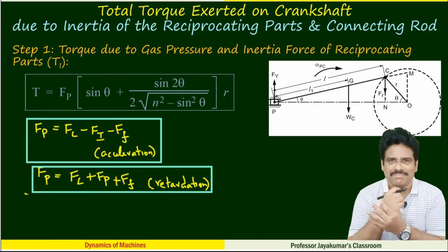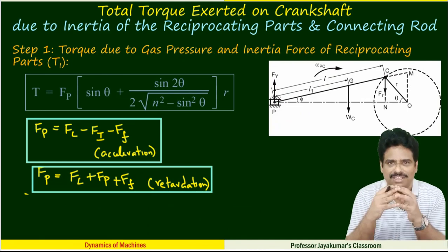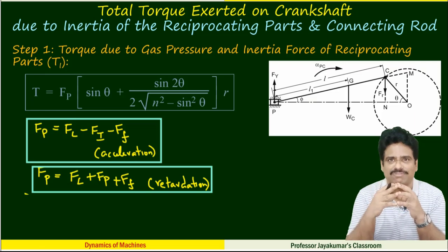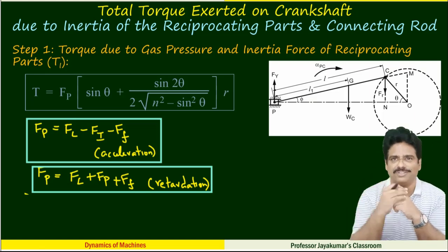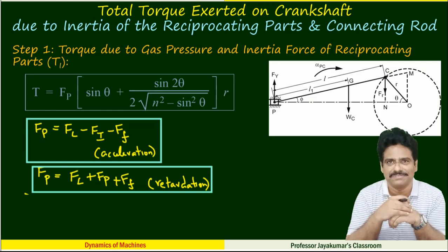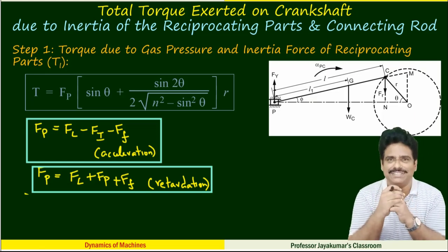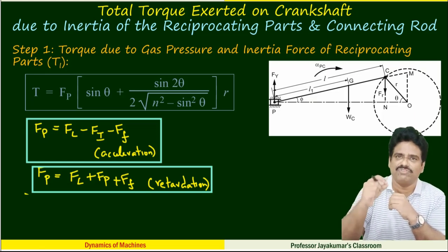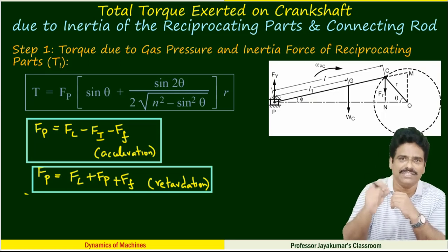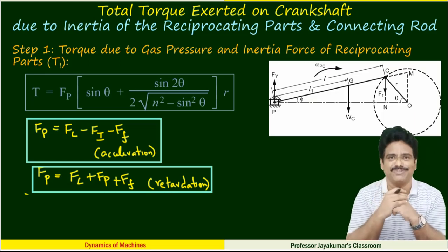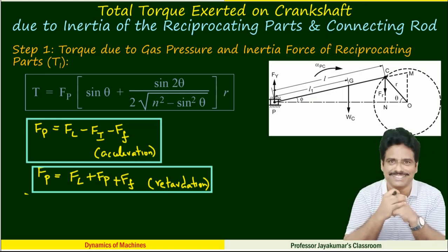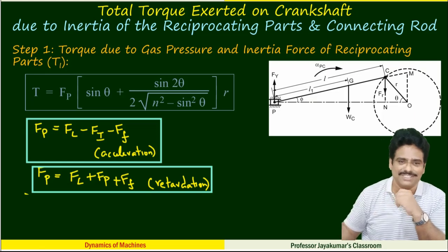Step 1: our aim is to find the resultant torque exerted on the crankshaft. First, let us find the torque exerted due to gas pressure and inertia force of the reciprocating parts. We already derived the equation in the previous lecture. The formula is: T1 = FP × [sin θ + sin 2θ / (2√(n² − sin²θ))] × R.